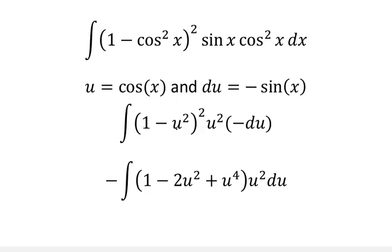We multiply 1 minus u squared quantity squared FOIL style — first times first, inner, outer, last — and we end up with 1 minus 2u squared plus u to the fourth. Our u squared is the same, our du is the same, we just take the negative out to the front. And look at this — it's a polynomial.